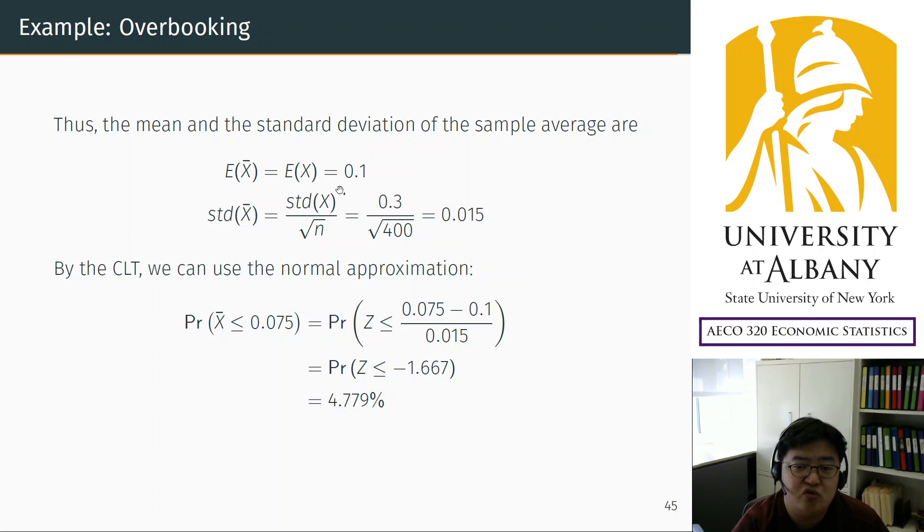Now you use this mean and standard deviation as the parameters for the normal distribution of the sample average. Then you get this standardization. After standardization, we calculate the probability that standard normal distribution is smaller than minus 1.667. If you use Excel or a calculator, it is 4.779 percent.